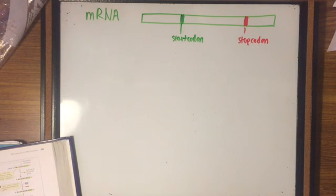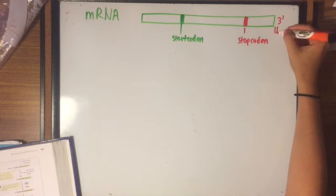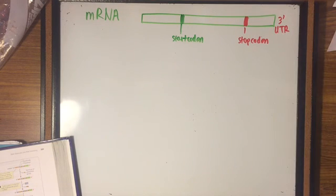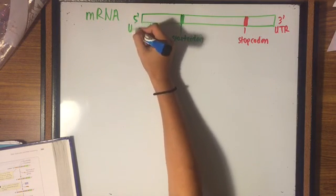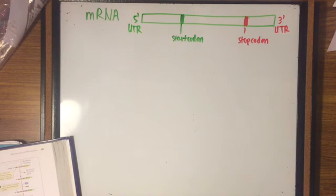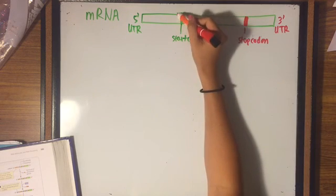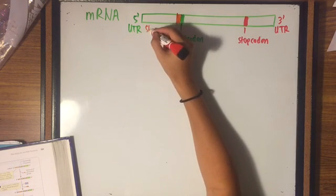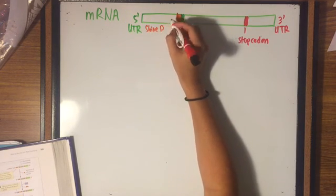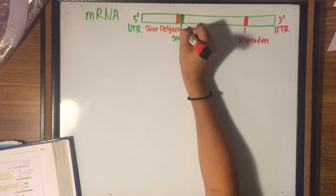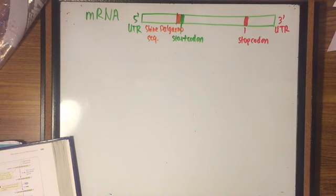There is also the 5' untranslated region that does not encode any amino acids, as well as the 3' untranslated region that plays a role in stability. In the 5' untranslated region in bacteria, there is the Shine-Dalgarno sequence, which serves as the ribosome binding site during translation.